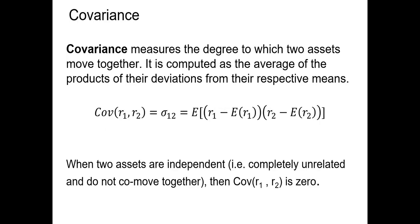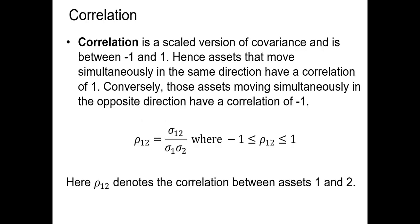Let's start our statistics review by discussing covariance. Covariance measures the degree to which two assets move together. The higher the covariance, the more positively two random variables move together. If covariance equals zero, the random variables are independent of one another and their stock returns will not be related. Negative covariance indicates that high values of one random variable are likely to occur when there are low values of the other.